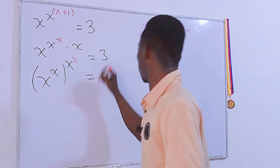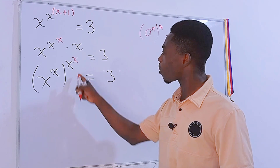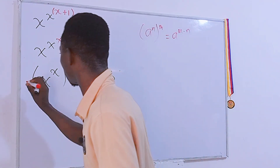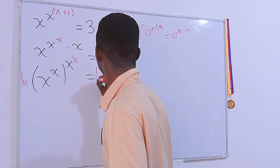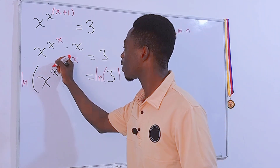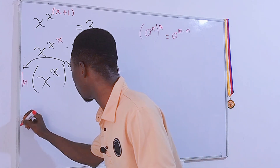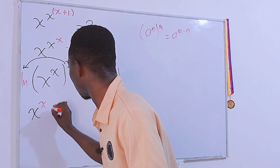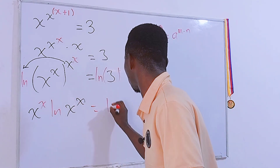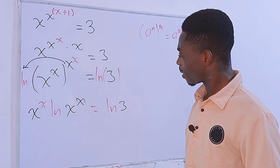So we are going to have x to the power x to the power x, and the right-hand side is 3. Now let's go ahead and drop this power down by introducing ln on each side. We put ln here and ln here. Now we can move this power to the front, so the new equation will be x to the power x times ln of x to the power x, and this is equal to ln of 3.